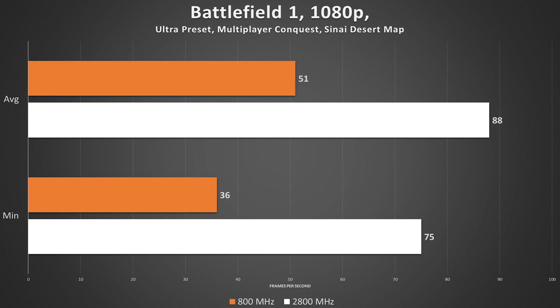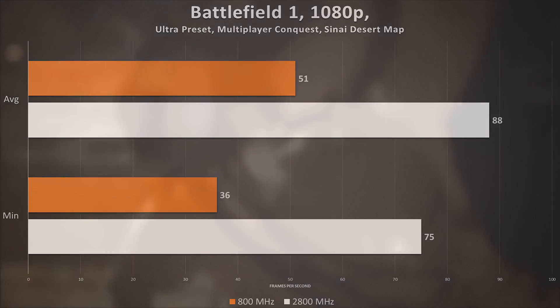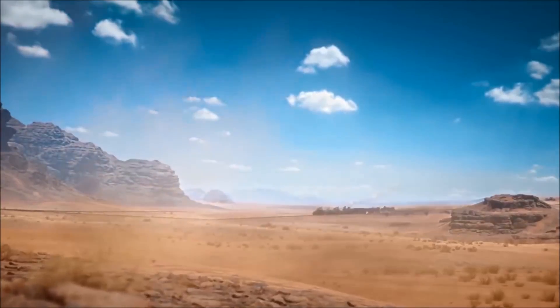Now onto Battlefield 1 — a very well-optimized game that even handled a 1.2GHz CPU with ease. But now, with an average frame rate of 51 and a minimum of 36, we've found an Achilles heel. In-game performance consisted of very minimal stuttering and a tight FPS range, always a sign of great optimization — and that was true even without the RAM bottleneck.